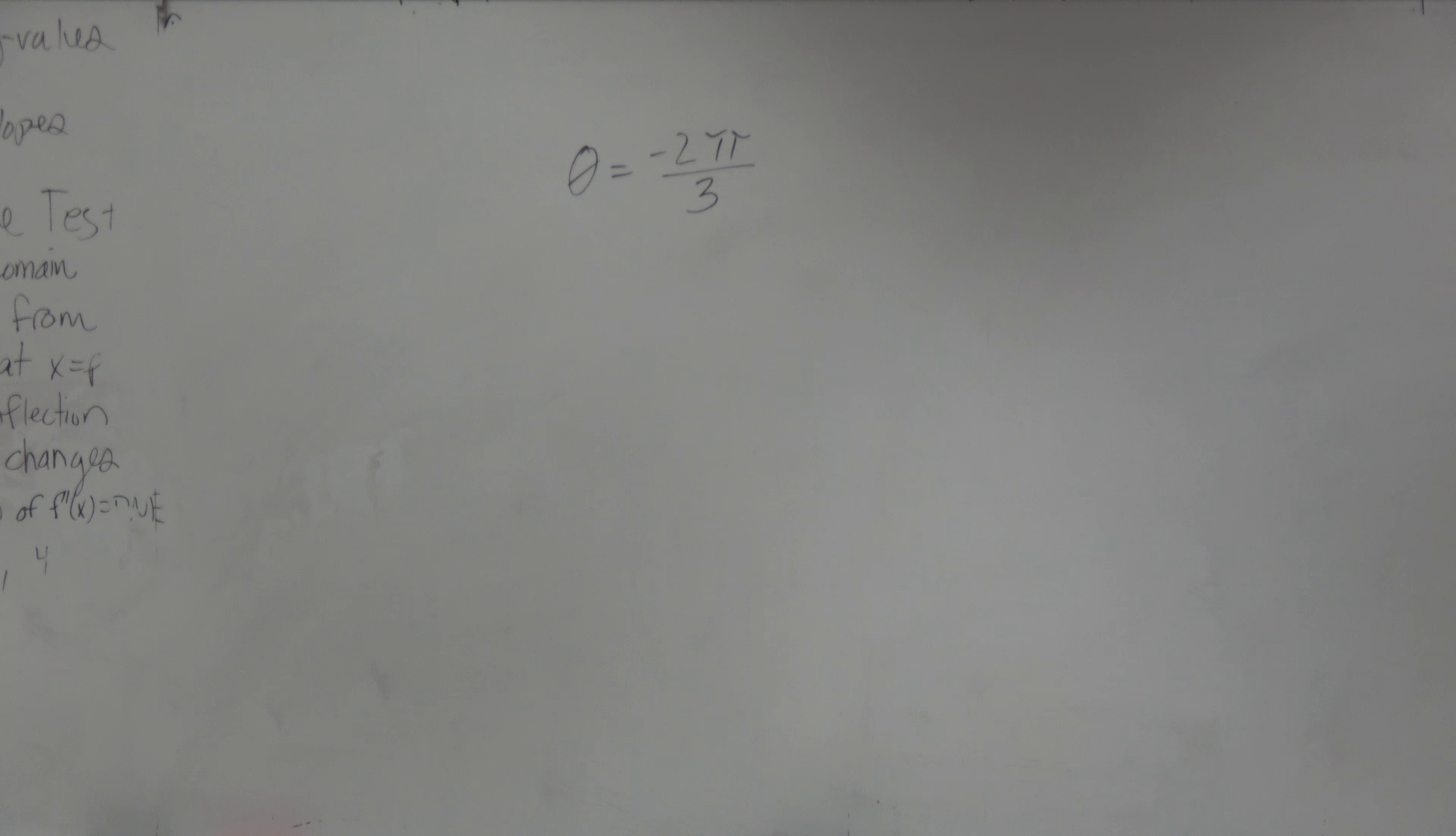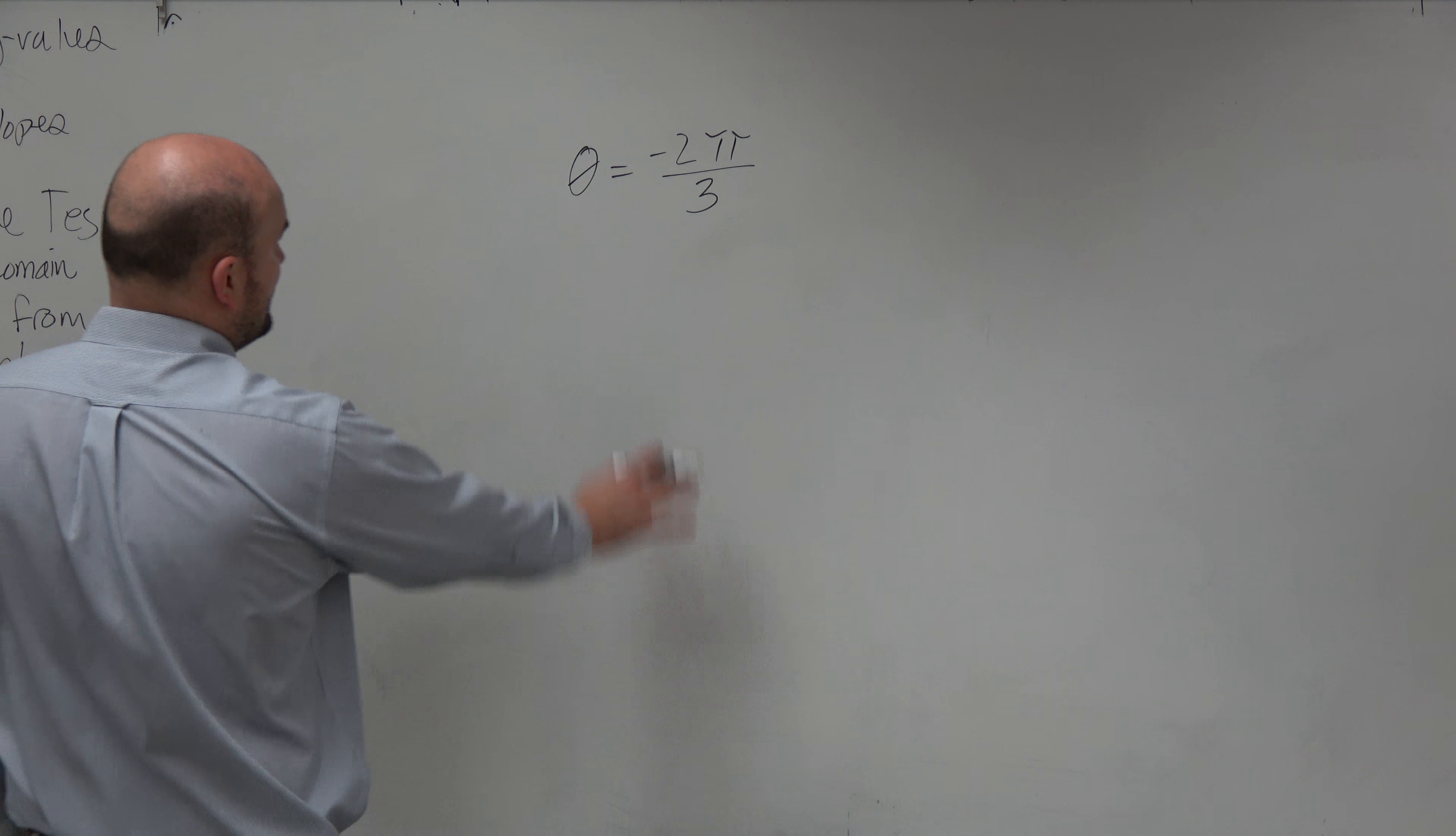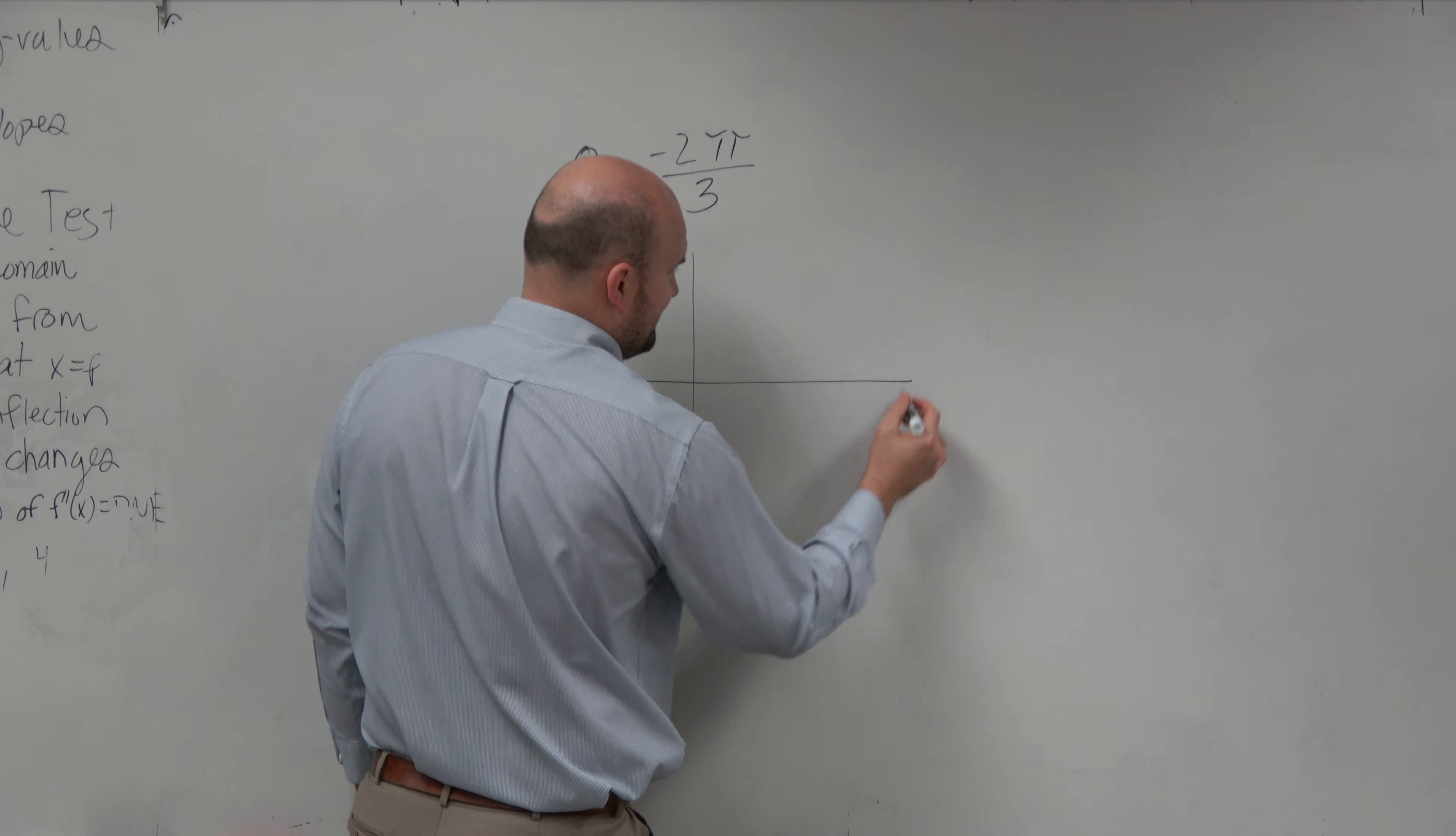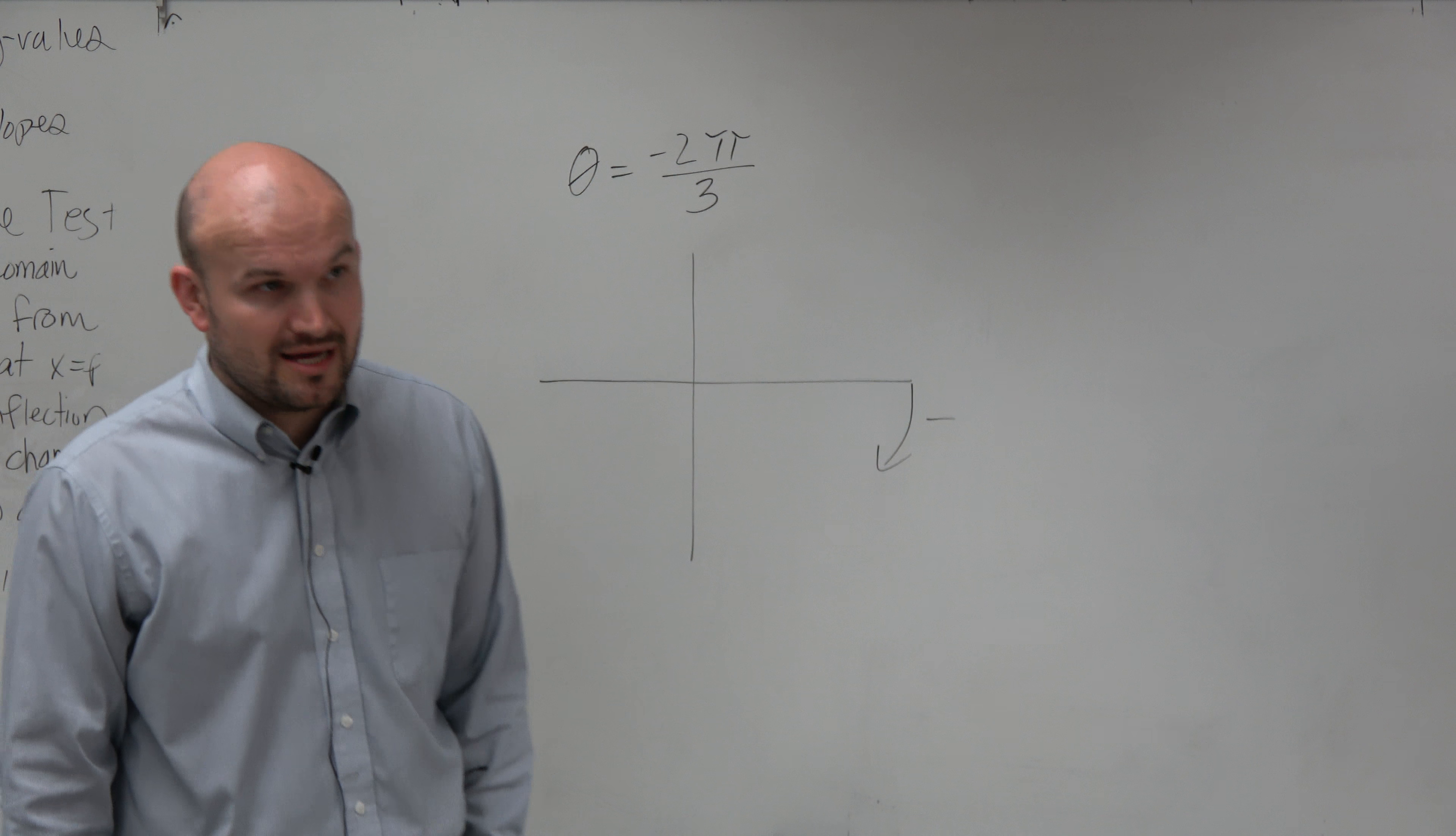Next problem. In this example, we have a negative angle. A negative angle tells us that when we graph this in standard form, we're going in the negative direction, which is clockwise.